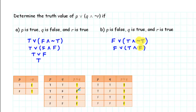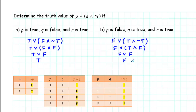The only way that a conjunction can be true is if both parts are true. Finally, we have the disjunction false or false. Looking that up in our disjunction table, false or false is false — in fact, the only way a disjunction can be false is if both parts are false. So we end up with a false statement overall. Our conclusion is that the given statement is false if P is false, Q is true, and R is true.